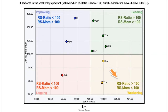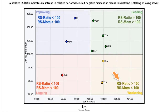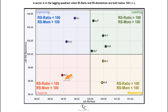A sector is in the weakening quadrant (yellow) when RS ratio is above 100 but RS momentum moves below 100. A positive RS ratio indicates an uptrend in relative performance, but negative momentum means this uptrend is stalling or losing power.